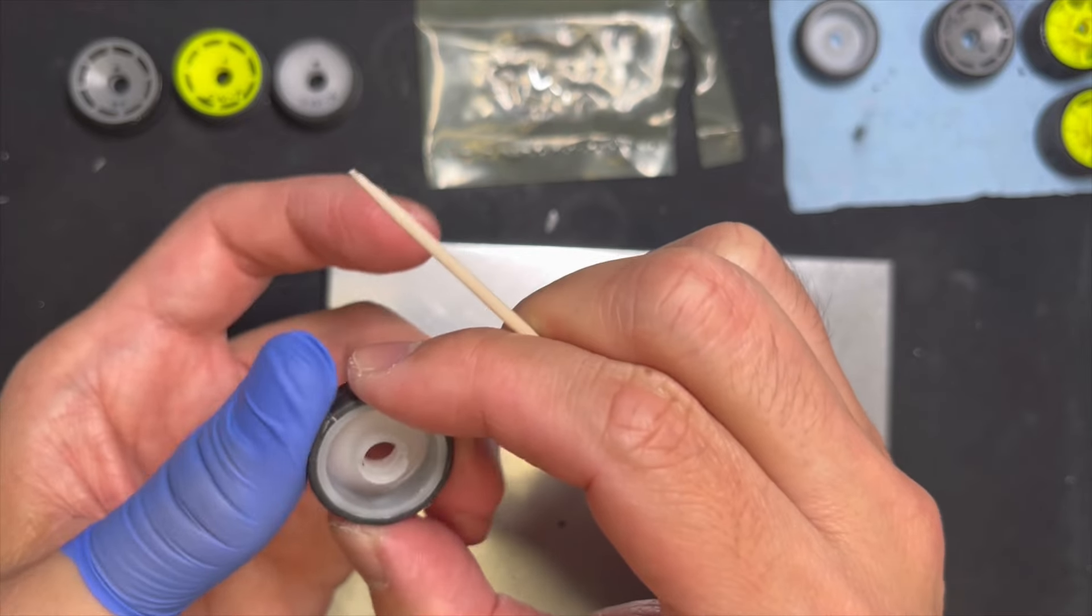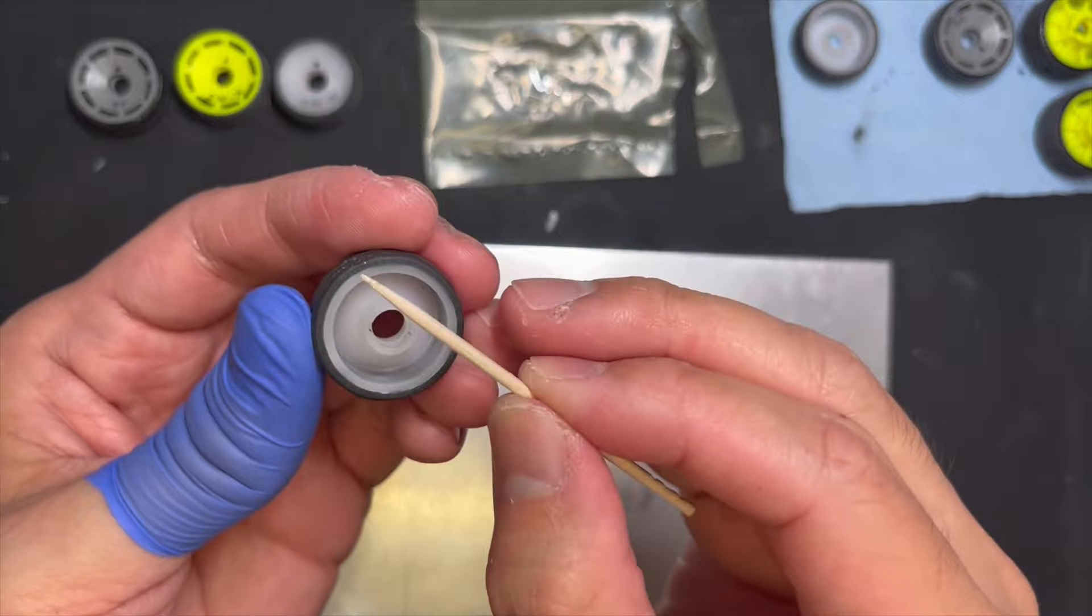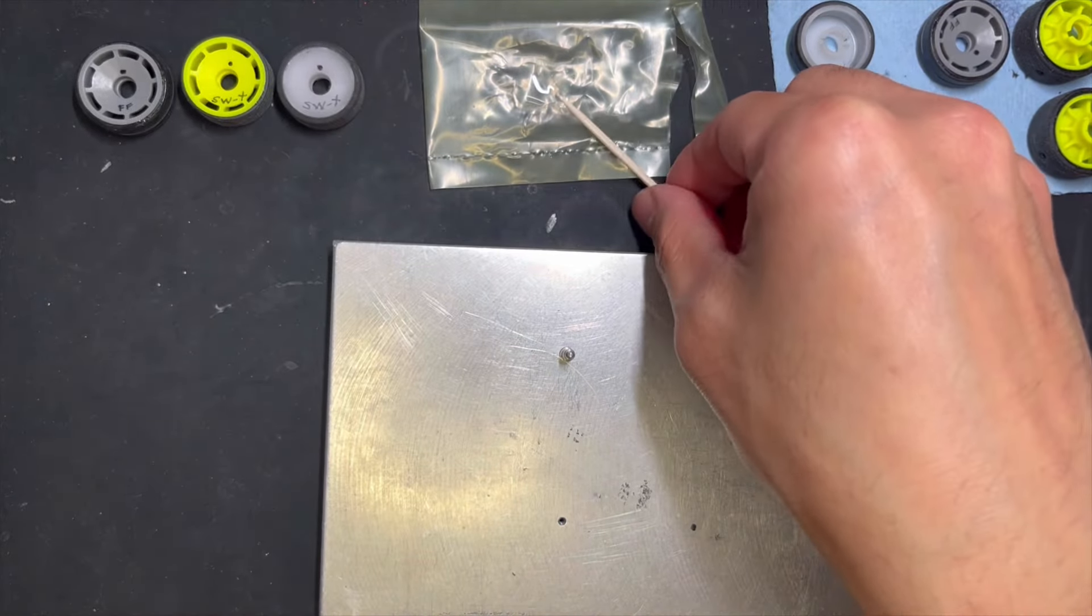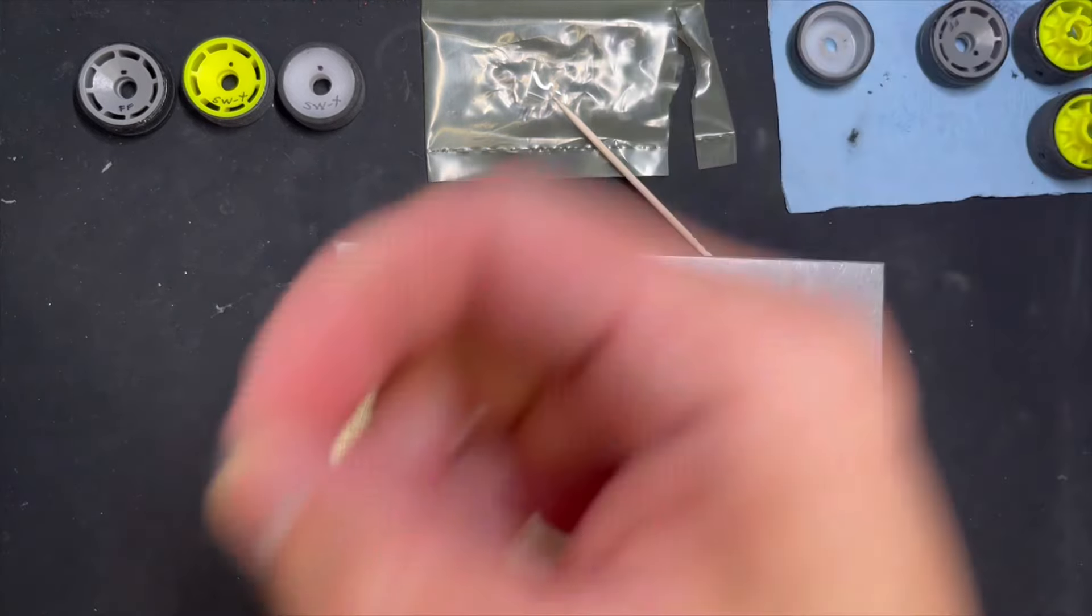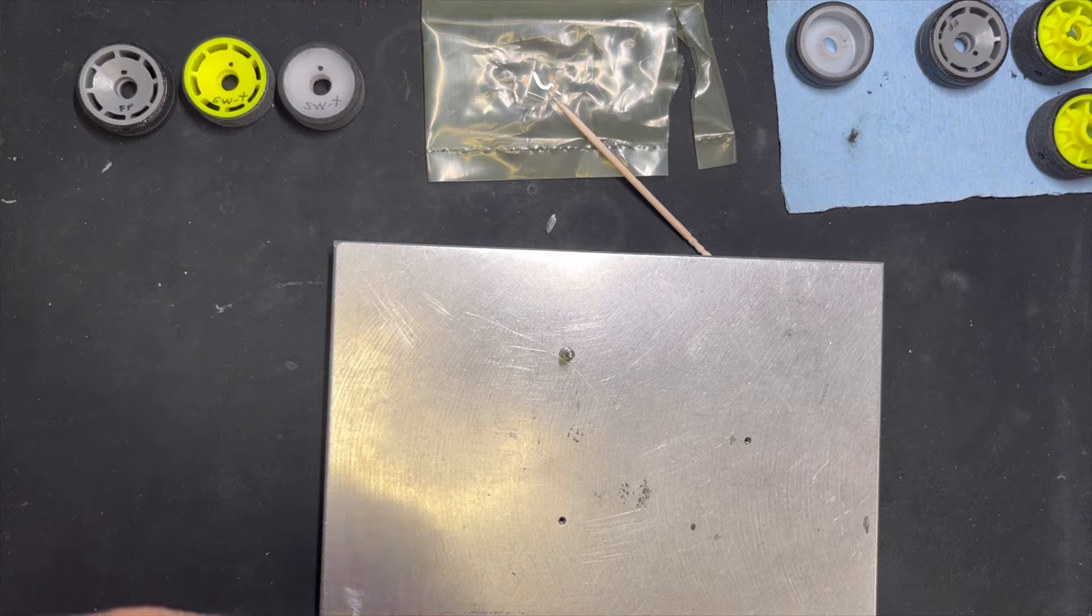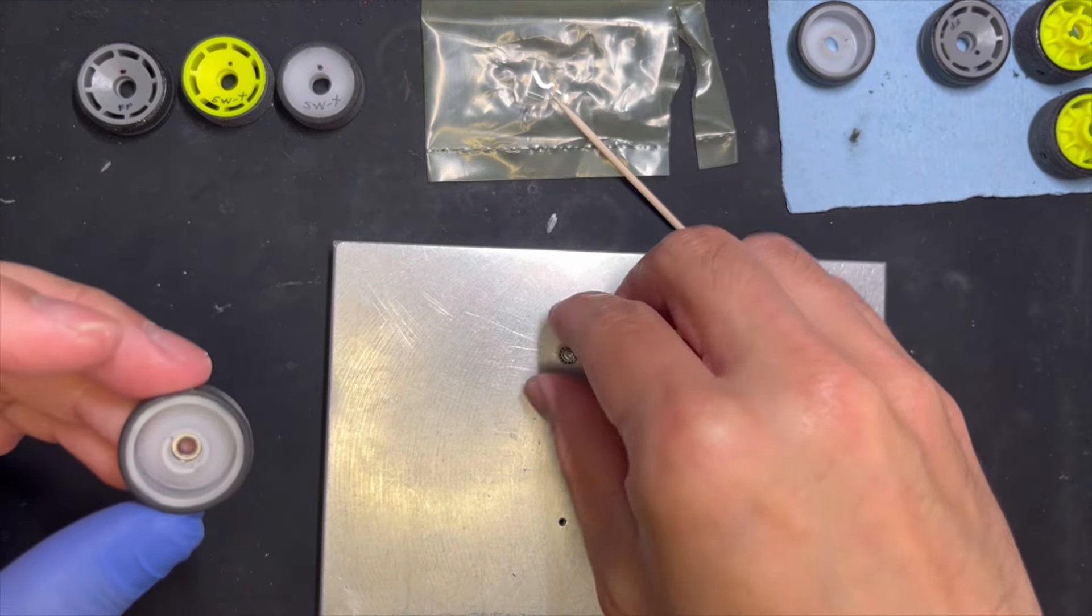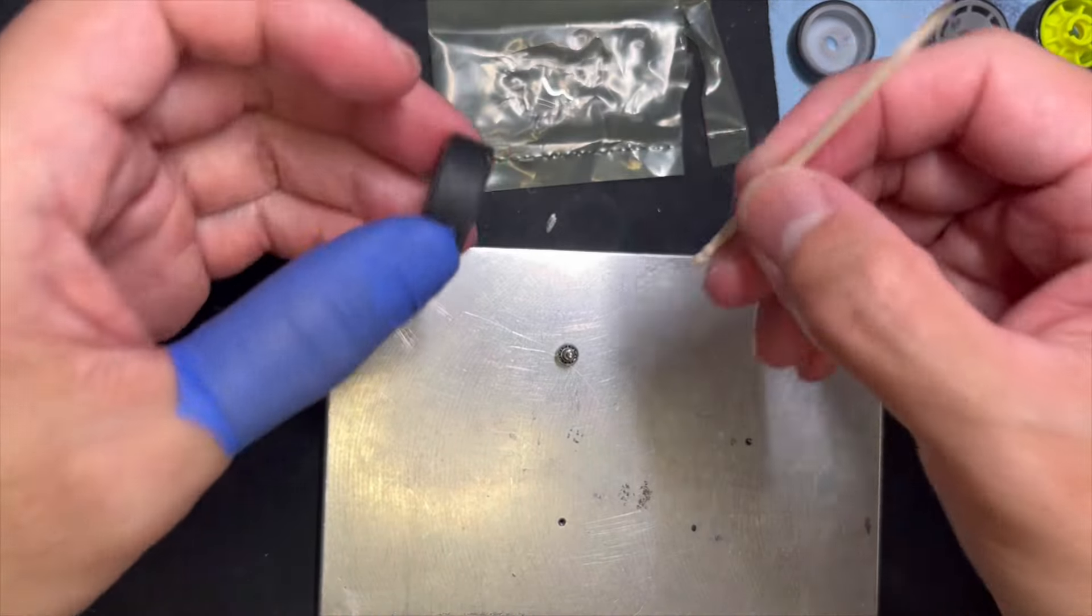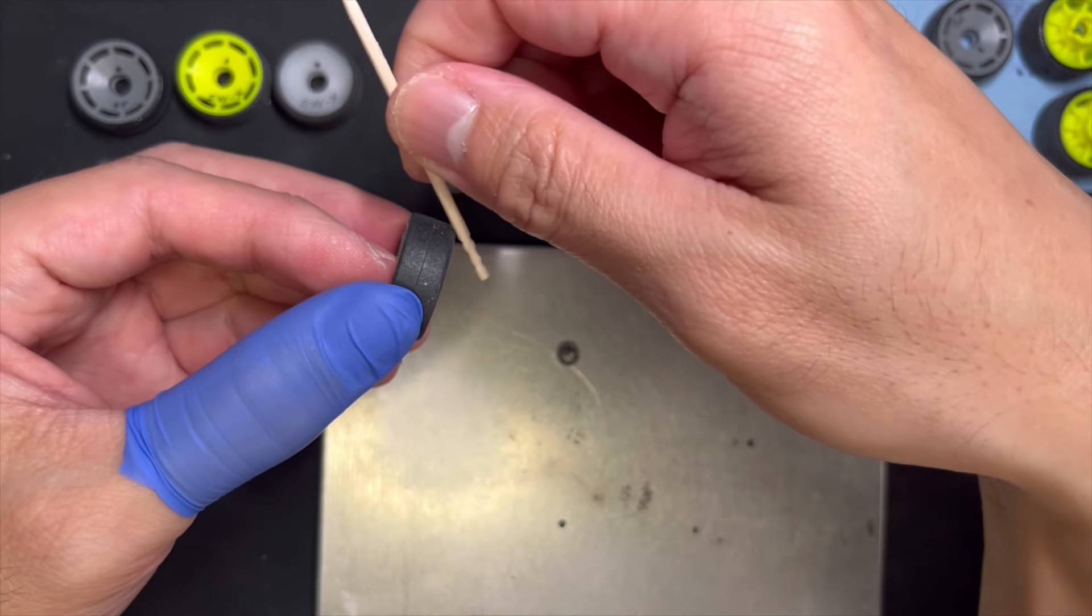And now let's put super glue on the sidewall. Again, just the sidewall. Just the sidewall, not the corner of the tire. Sidewall only. This side only, not this side.